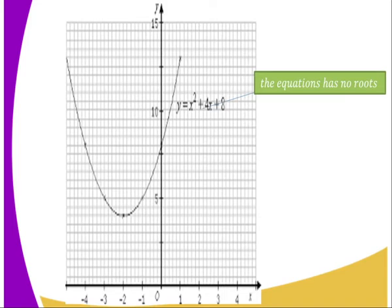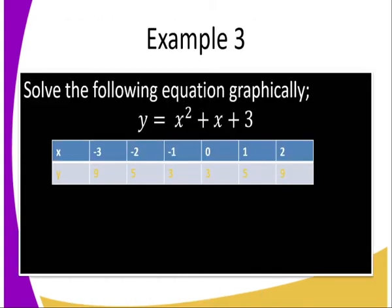The graph does not touch the x-axis. What does that mean? It means the equation doesn't have roots. Remember, there are three ways you can get the roots. When b squared minus 4ac is less than zero, it means there are no real roots. These kinds of equations, when solved graphically, never touch the x-axis — that is the reason we say it doesn't have roots.